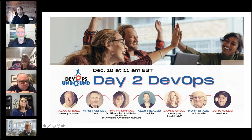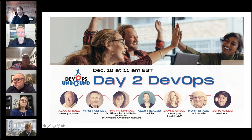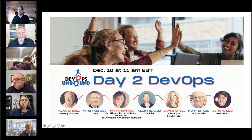Next up is Kurt Chase, who has a distinguished career in release engineering and software. He recently joined Tricentis as Head of Global Release Management. Prior to that, he spent time at Splunk and Autodesk, where he worked on ten to fifteen AutoCAD releases. He joined Splunk running release engineering and engineering services, focused on developing software faster with higher quality at much larger scale.